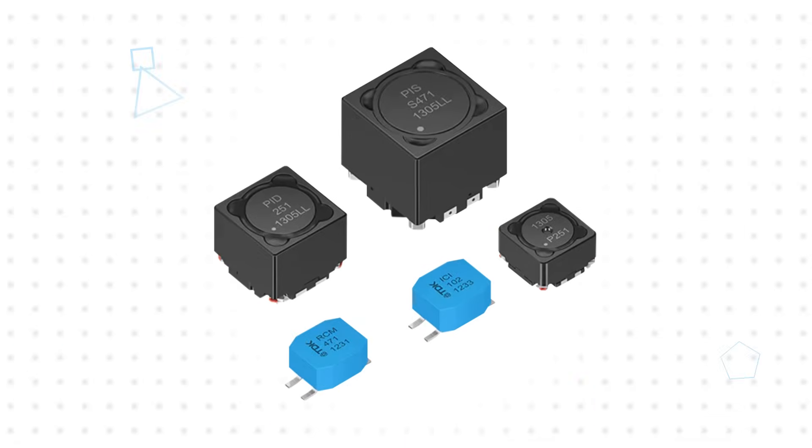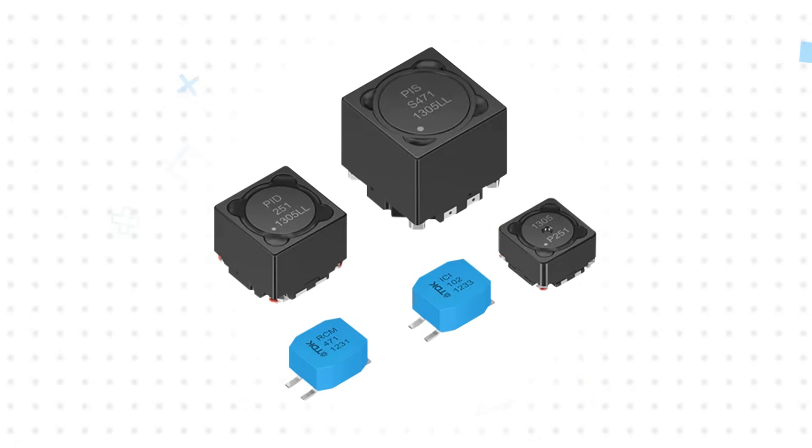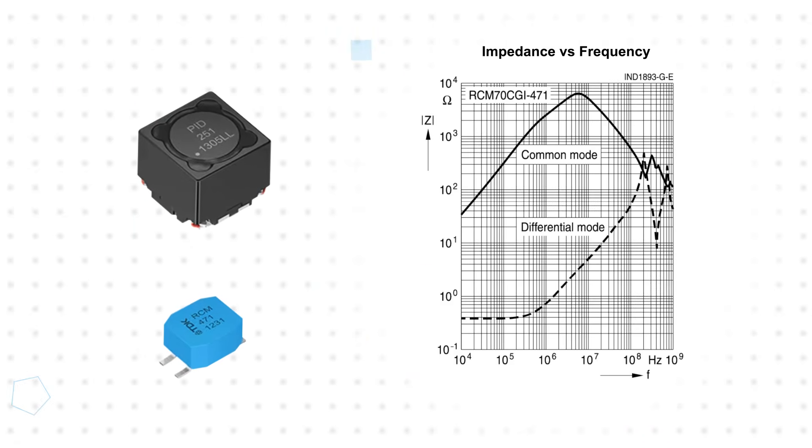The TDK RCM70CGI-471 common-mode choke attenuates common-mode noise to mitigate EMI problems and meet signal integrity requirements. They're rated for 700mA and 80V.